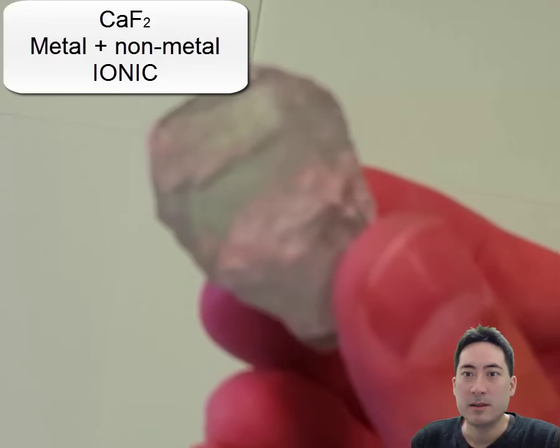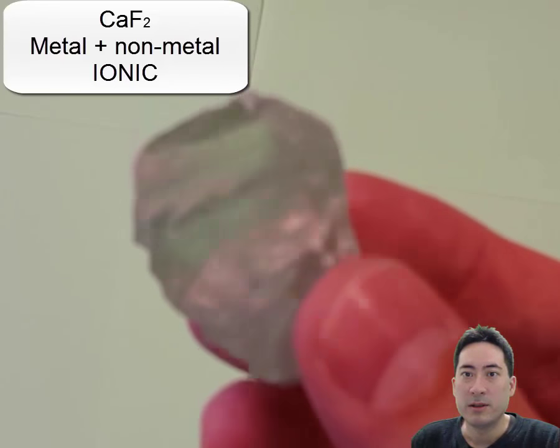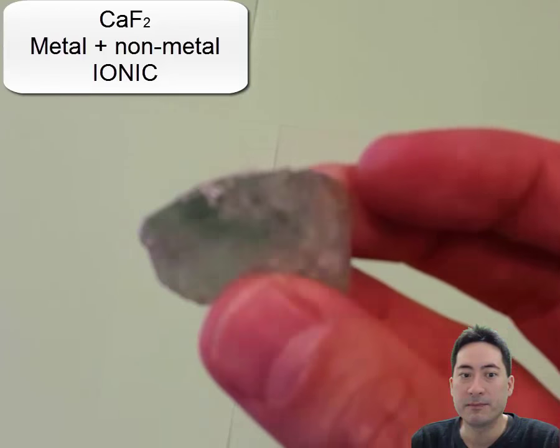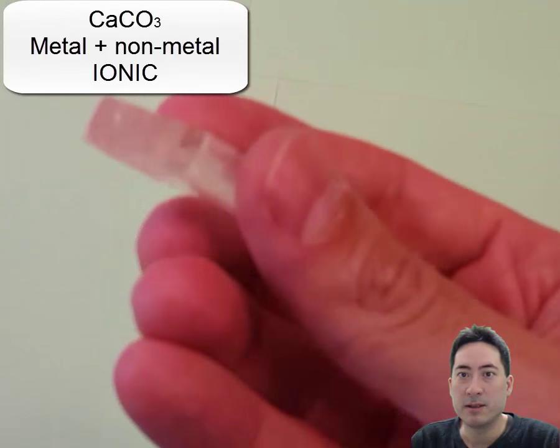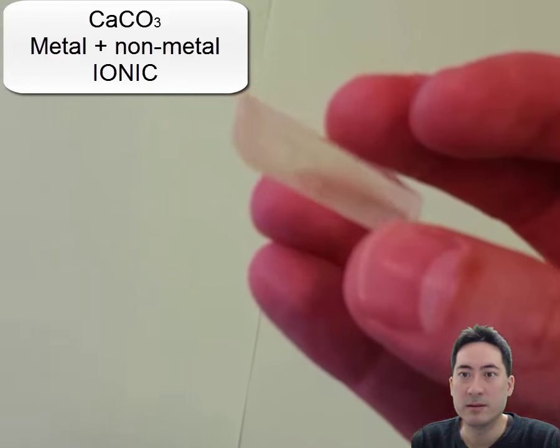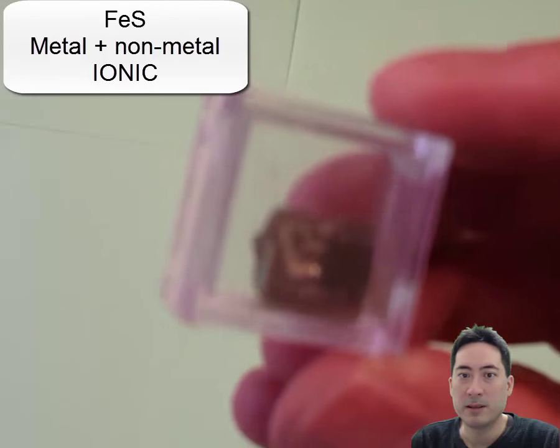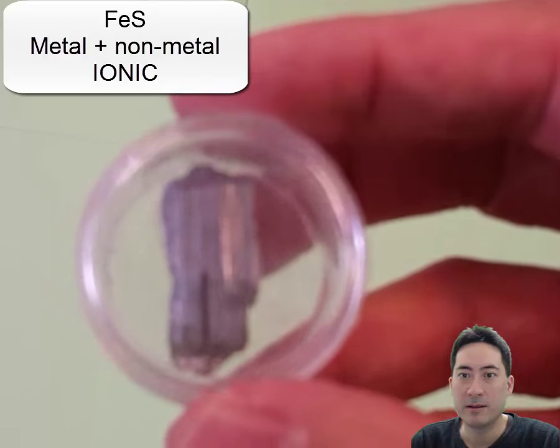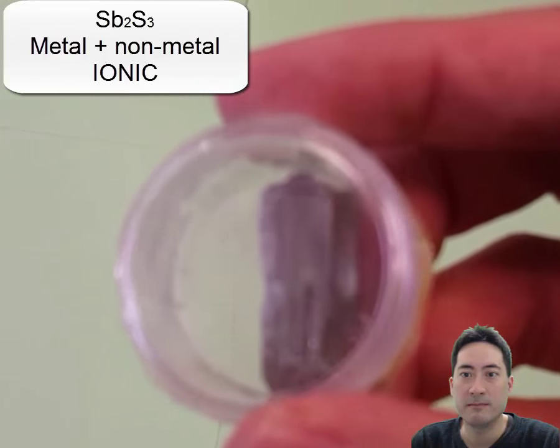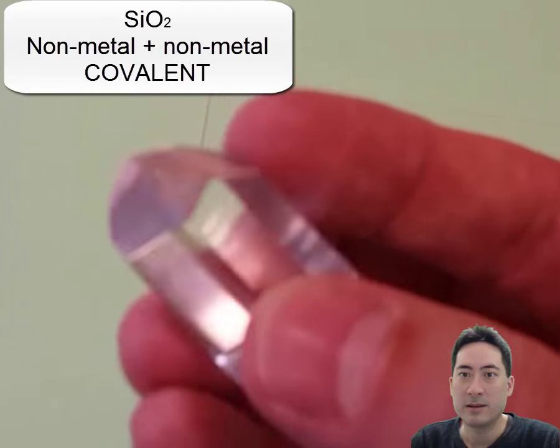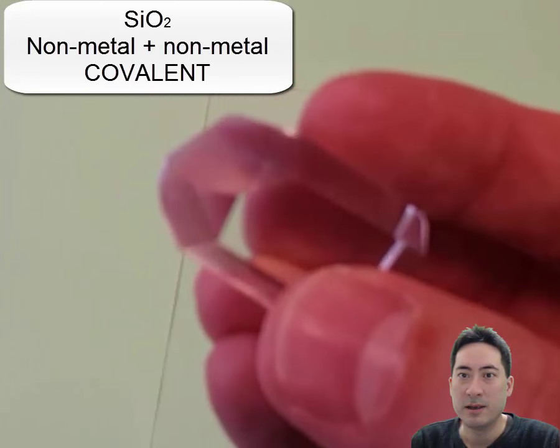Here we have some examples. This is calcium fluoride, metal plus nonmetal, so that's ionic. It's very crystalline looking. This next one is also crystalline looking. Calcium carbonate, metal plus nonmetal, so that's ionic too. These two look metallic but they're not. They're actually ionic so they won't conduct electricity. And lastly is a covalent substance because silicon and oxygen will be regarded as nonmetals.